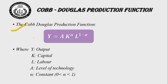The Cobb-Douglas production function is: Y = A · K^α · L^(1−α), where Y is output, K is capital, L is labor, A is the level of technology, and α (alpha) is a constant with a value between 0 and 1. This production function is very important in growth theories and widely used by new classical economists.